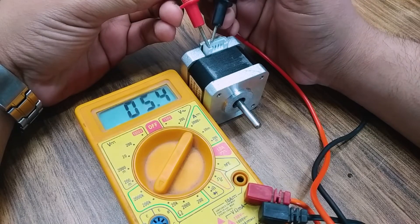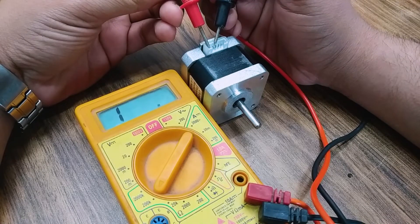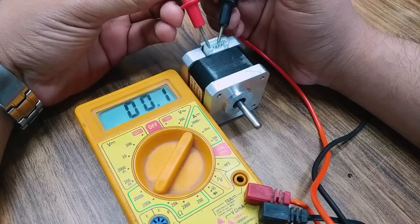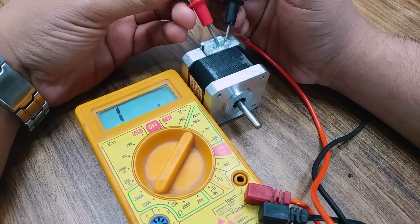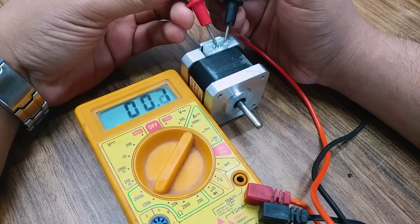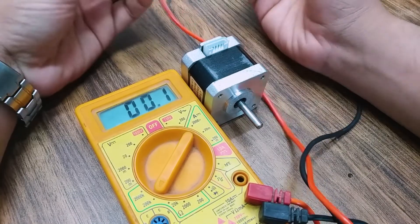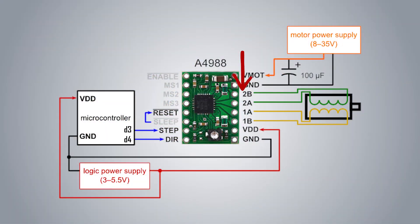You can determine the polarity of the motor using your multimeter. Each pair of the same phase should have low resistance when measured with a multimeter. So you have to check the pairs which have zero resistance and connect positive and negative of phase A to 1A and 1B and accordingly for phase B.